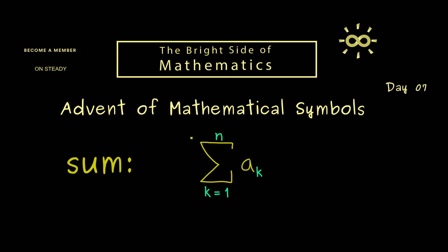This means if this is the sum of the numbers ak, then we get a1 plus a2 plus a3 plus and so on until we reach an.